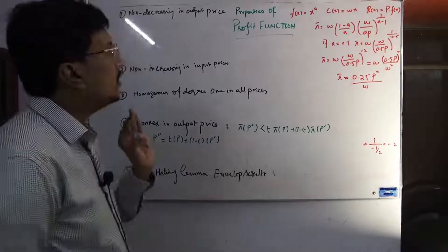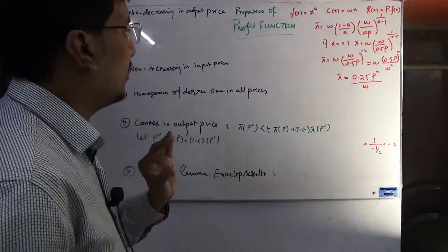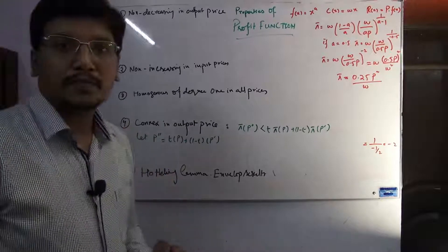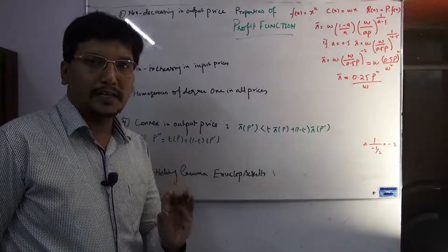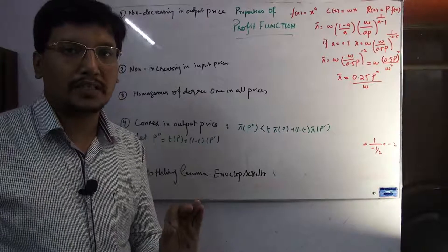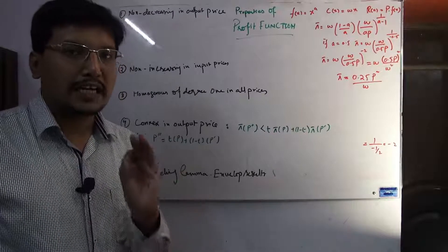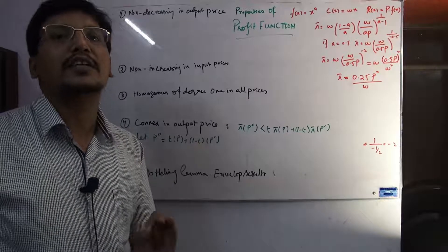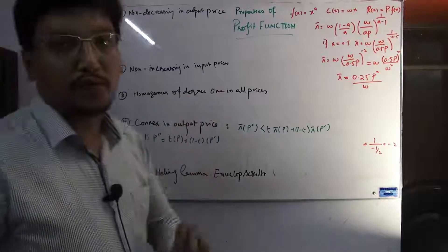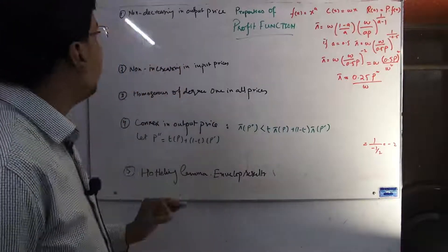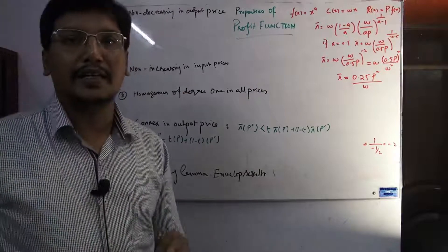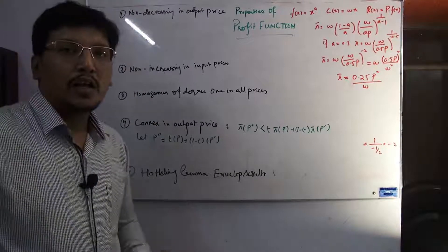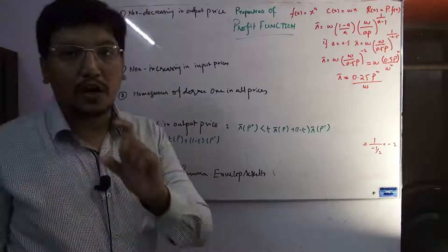The first property is very logical and rational: non-decreasing in output prices. If you are the production manager, if you are the firm thinking from the performance perspective, if the price of the commodity you are producing is increasing, it will not decrease your profit. This is the sense of non-decreasing.